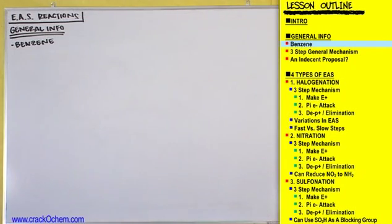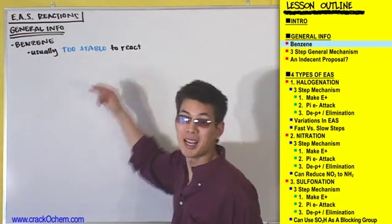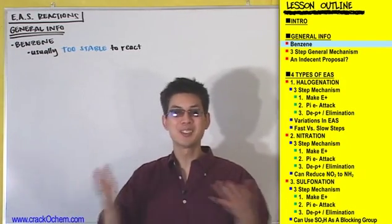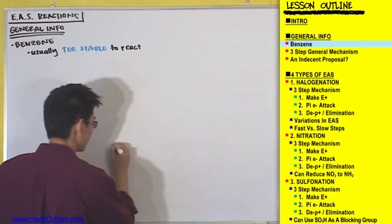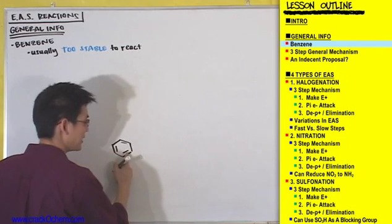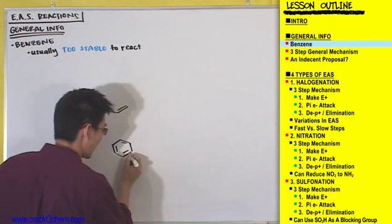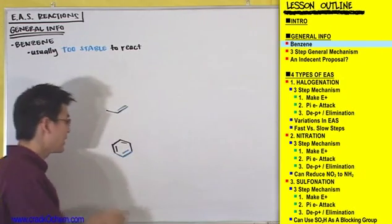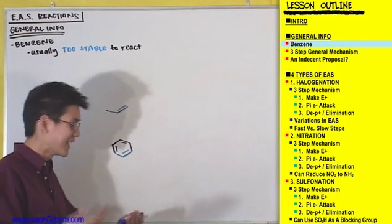Benzene is usually too stable to react, because if it were to react it would have to break its double bond, lose its aromaticity, and lose its conjugated cyclic flow of electrons — which is what makes it so stable. To illustrate this, let's compare benzene, which has a bunch of double bonds inside it, to another double bond compound — an alkene. Because if you look at these two, at least at this part, they look exactly the same. So if you didn't know anything about aromaticity, you'd expect that since they look so similar, they would react in exactly the same way.